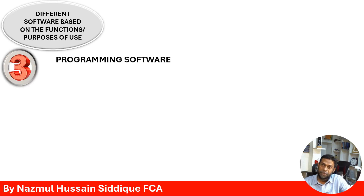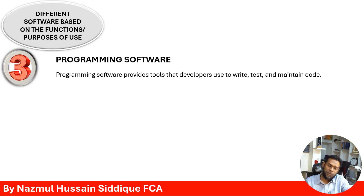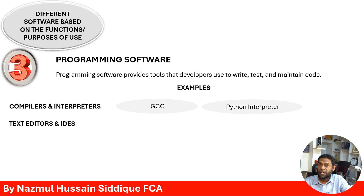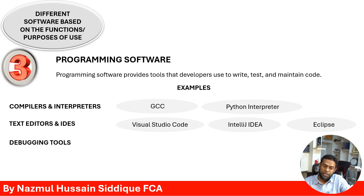The next category is programming software. Programming software provides tools that developers use to write, test, and maintain code, assisting programmers in developing new programs. Subcategories include compilers and interpreters — examples being GCC and the Python interpreter — text editors and IDEs such as Visual Studio Code, IntelliJ IDEA, or Eclipse, and debugging tools such as GDB or WinDbg.